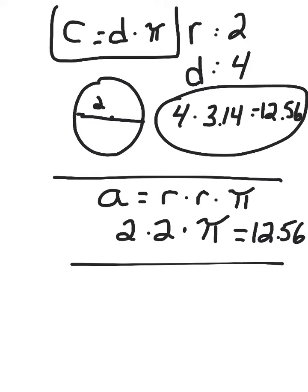In the IXL assignment, they're going to give you a bunch of different situations. Sometimes they'll just say, here's the diameter, what's the radius? And sometimes they'll say, here's the circumference, find the area. So in that case, if they say they have the circumference, you would say the circumference equals 12.56, and you need to find the area.